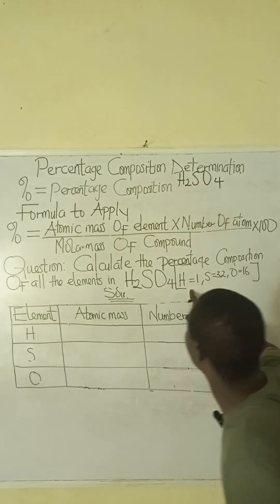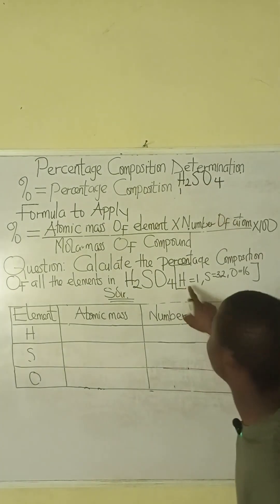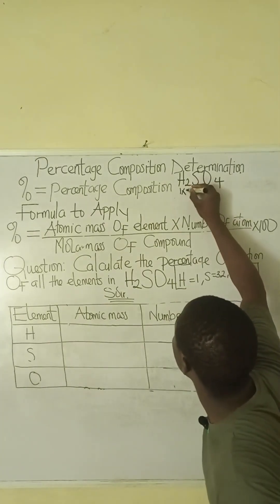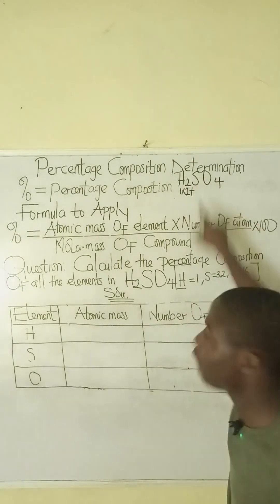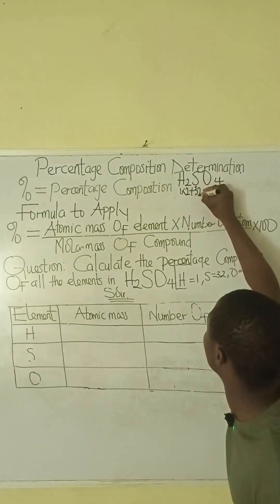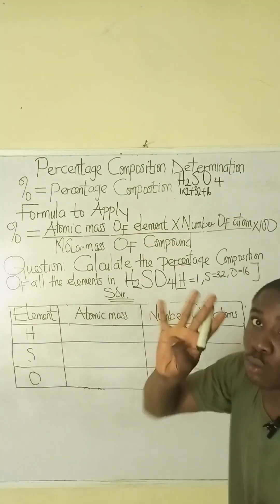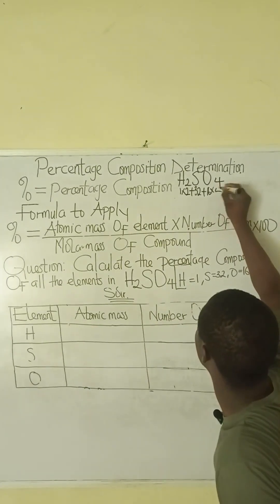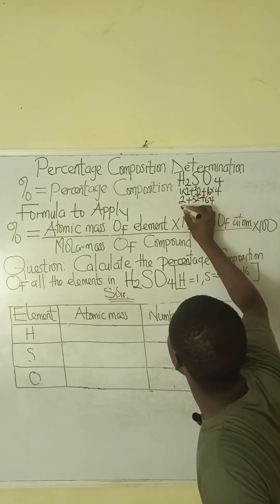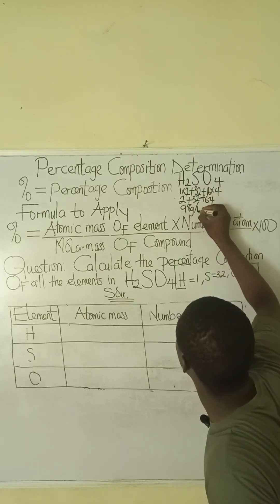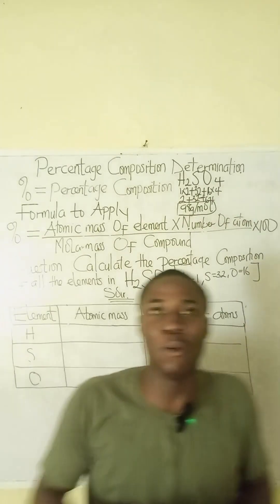To calculate molar mass, we write out the atomic masses of each element and add them. For hydrogen, the atomic mass is 1, and we have 2 atoms, so 1×2. For sulfur, the atomic mass is 32. For oxygen, the atomic mass is 16, and we have 4 atoms, so 16×4. This gives us 2 + 32 + 64.